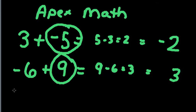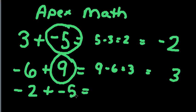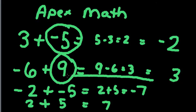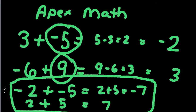When the two numbers have the same signs — negative 2 plus negative 5 — we just add the two numbers together normally. 2 plus 5 is 7, and the sign gets carried along, so negative 7. Just like if we had positive 2 plus positive 5, we'd get positive 7. So when the signs are the same, it's easy — it's just regular arithmetic, and the sign stays whatever the sign was to begin with.